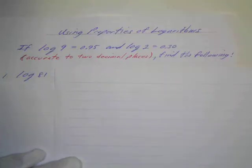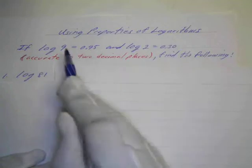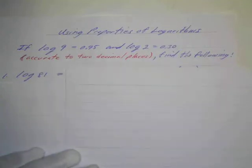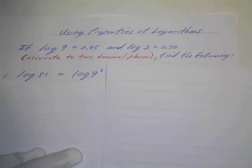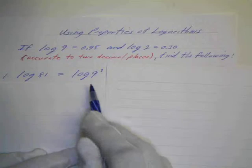Well how can we write 81 in either terms of 9 or 2 or both? Well we know that 9 squared is 81, so I can rewrite this and instead of writing 81 we can write 9 squared.